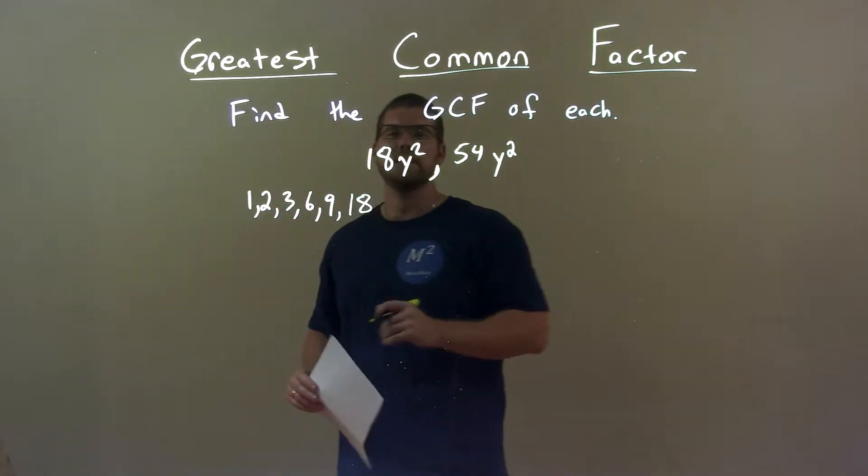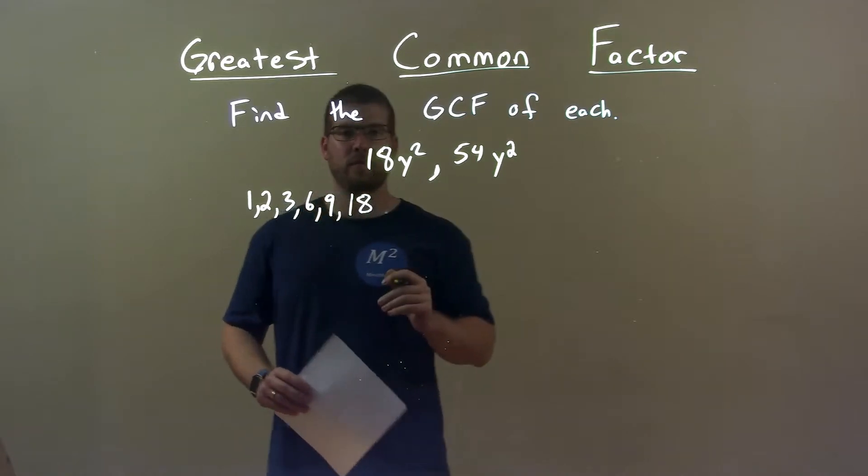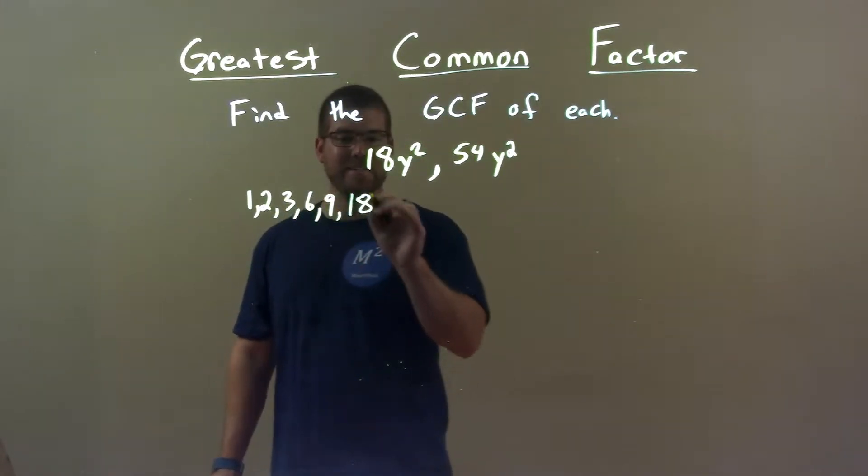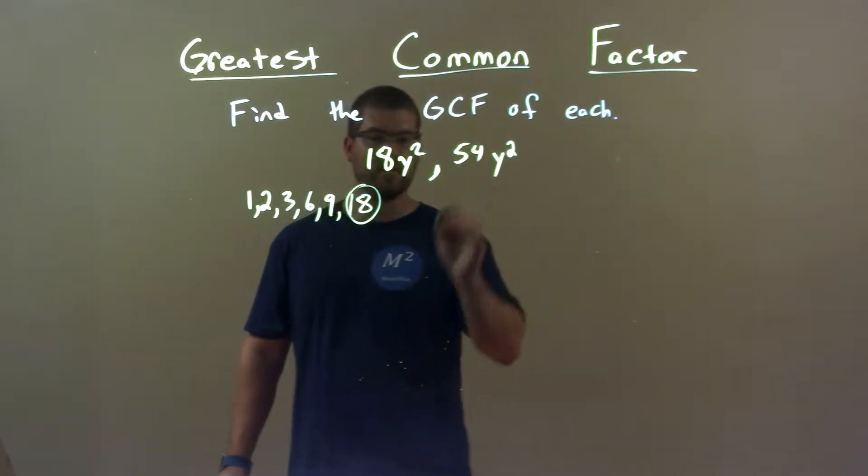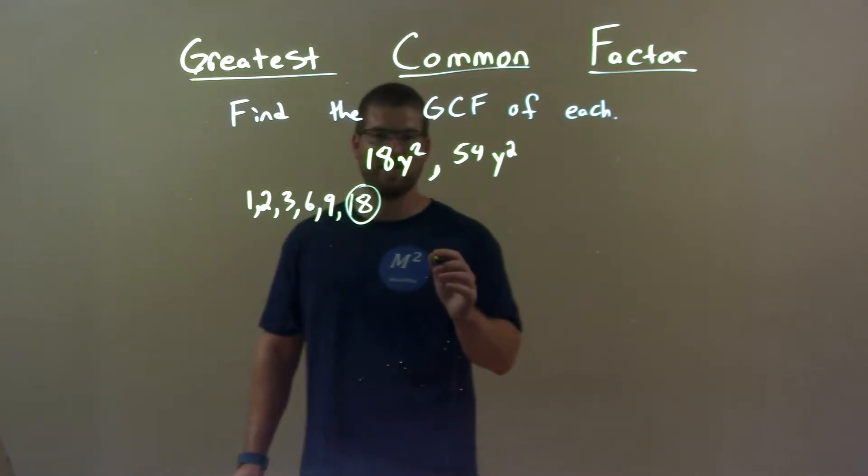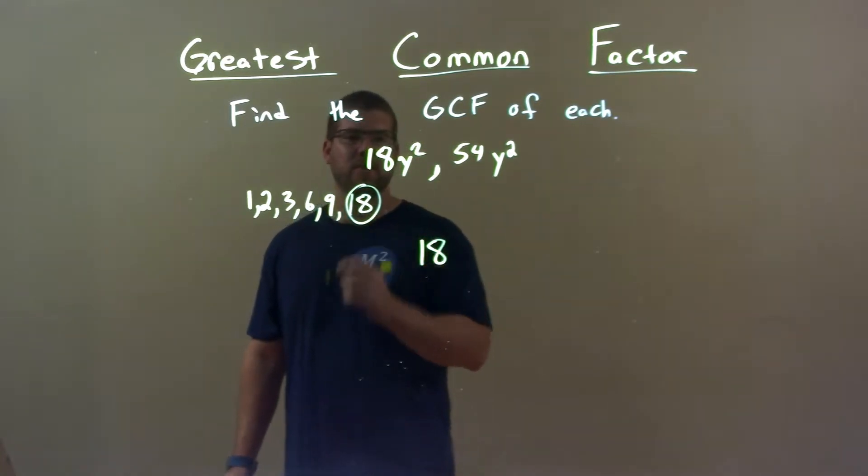Then, from that list, I take the largest one that also goes into 54. Luckily, 18 times 3 is 54, so 18 goes into both. That's the largest number.